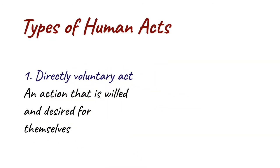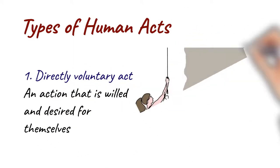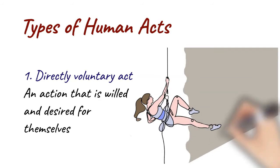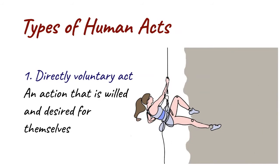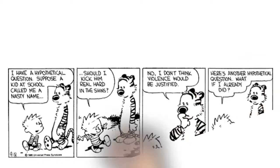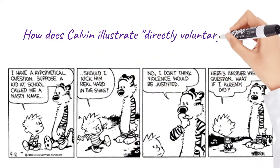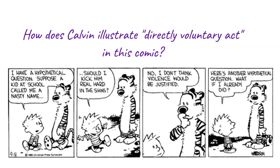There are three basic types of human acts. The first is the directly voluntary act — an action that is willed and desired for itself. A famous mountaineer was once asked, why do you climb mountains? And he simply said, because it is there. For class discussion: how does Calvin illustrate a directly voluntary act in this comic?